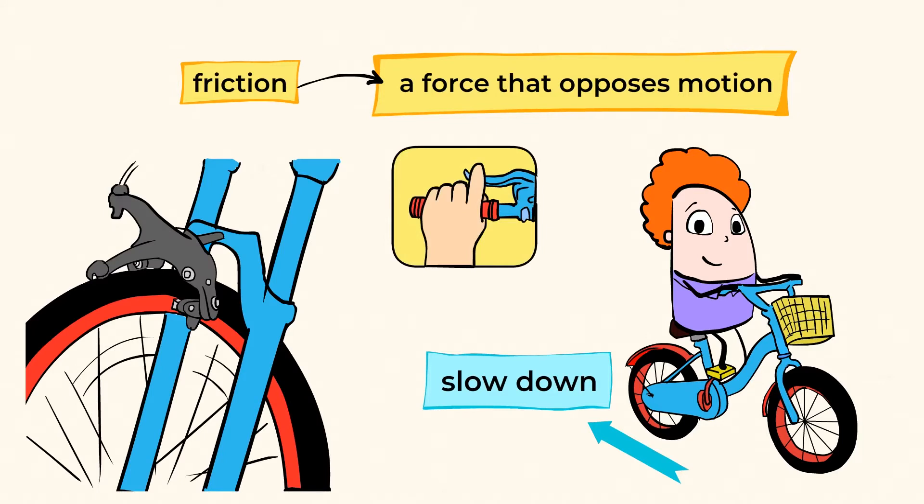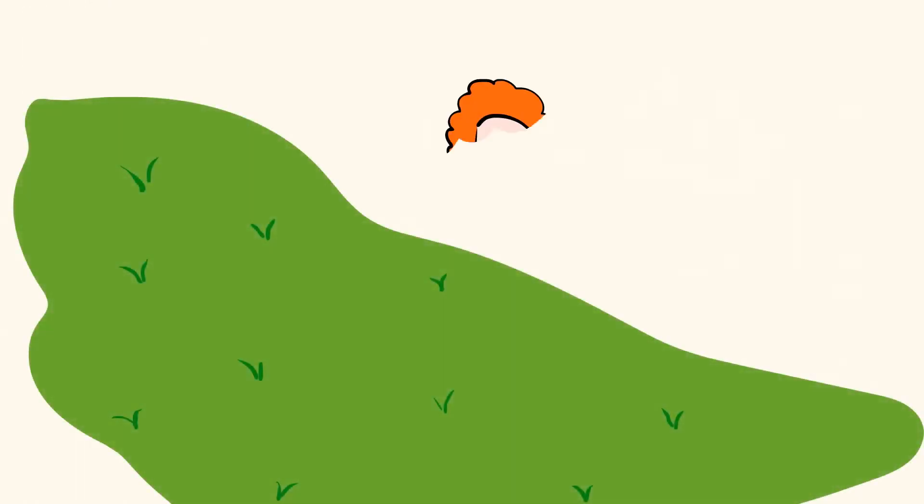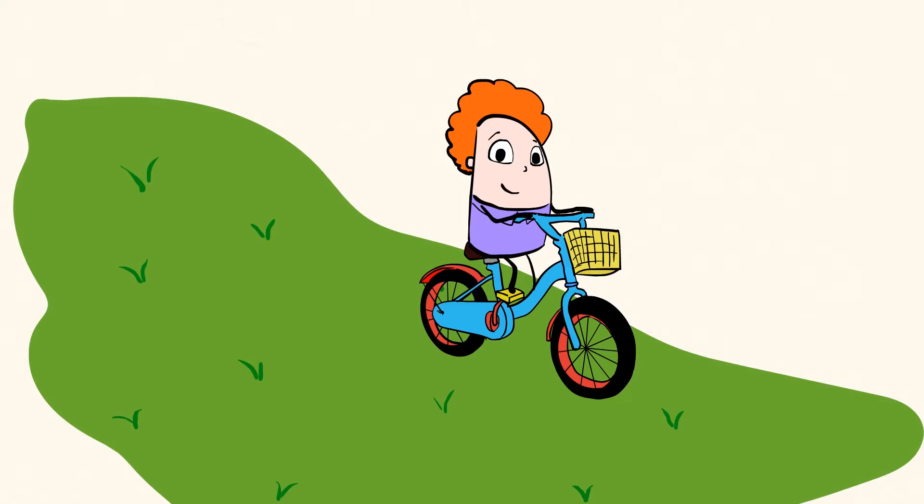When you use the brakes on your bike, the brake pads apply friction to the tires, and this friction slows down the motion of the bike. Think about riding your bike down a hill and how important friction is, right?